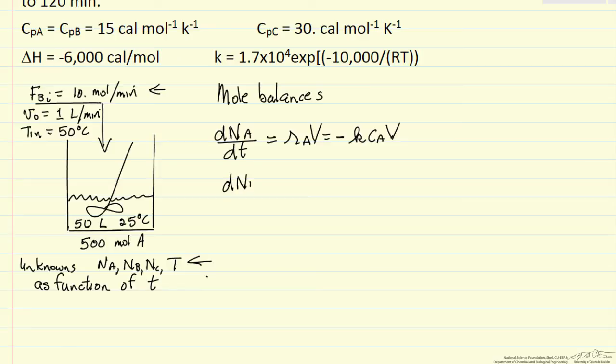The change in the number of moles of B with respect to time is going to have two terms. One, we're flowing B into the reactor, that's the molar flow rate, 10 moles per minute. And then we're reacting B at the same rate that we react A because of stoichiometry, so rate of reaction times volume. This is only true for T less than or equal to 50 minutes.